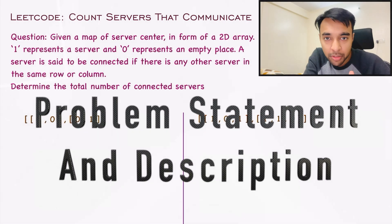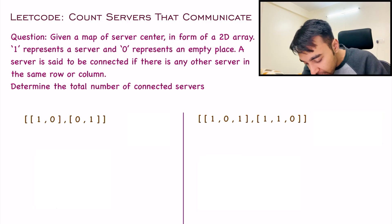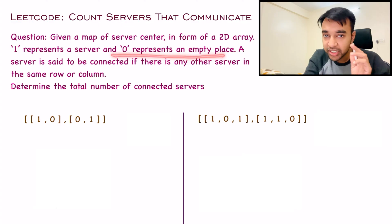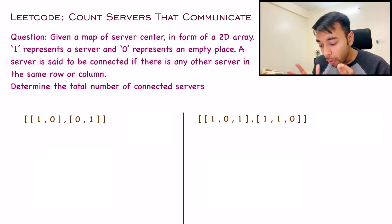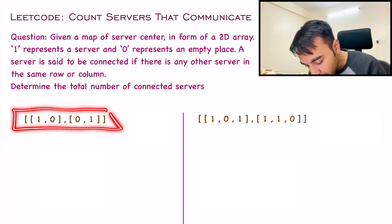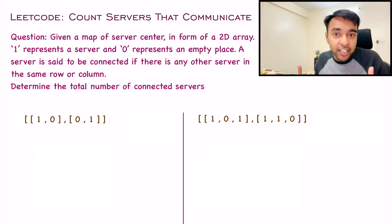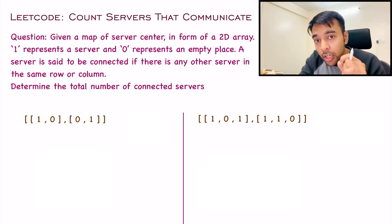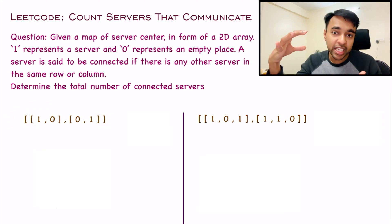Let us make sure that we are understanding the problem statement correctly. In this problem, you are given a map of a server center in the form of a 2D array, where 1 represents a server and 0 represents an empty place. Before getting any further, we need to understand what this actually means. To understand it, let us take the help of a sample test case. In test case number 1, I have a 2D array which is given in this form. You might wonder how this is defining a grid and what you make out of it. To understand it, you need to visualize this array in the form of a 2D array.